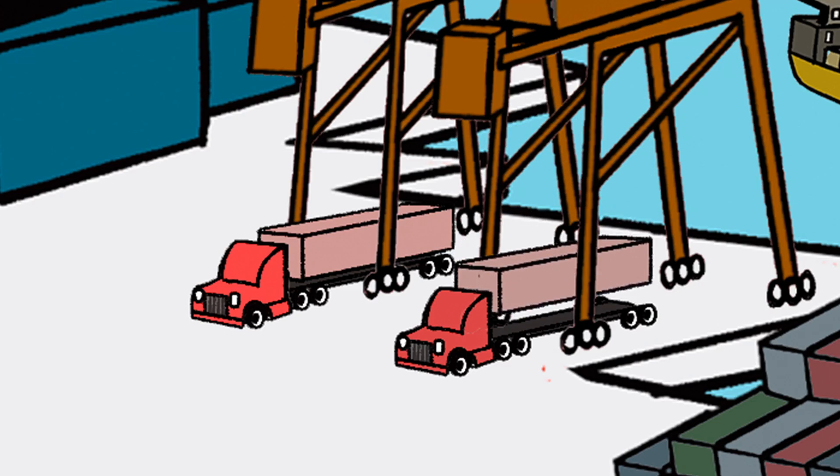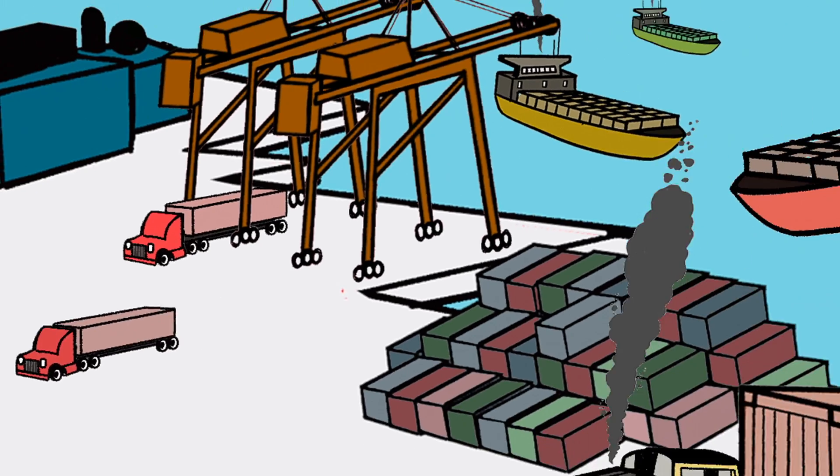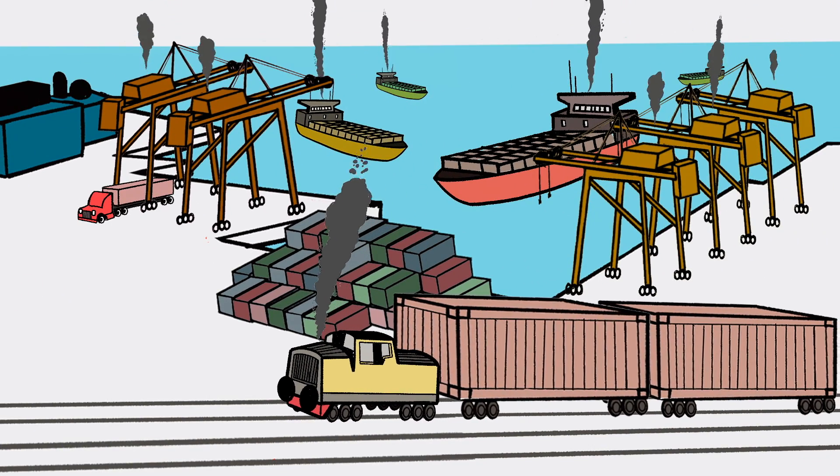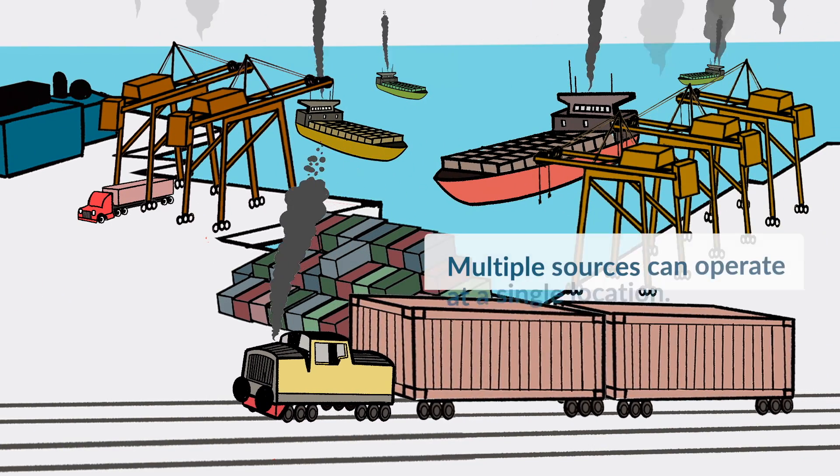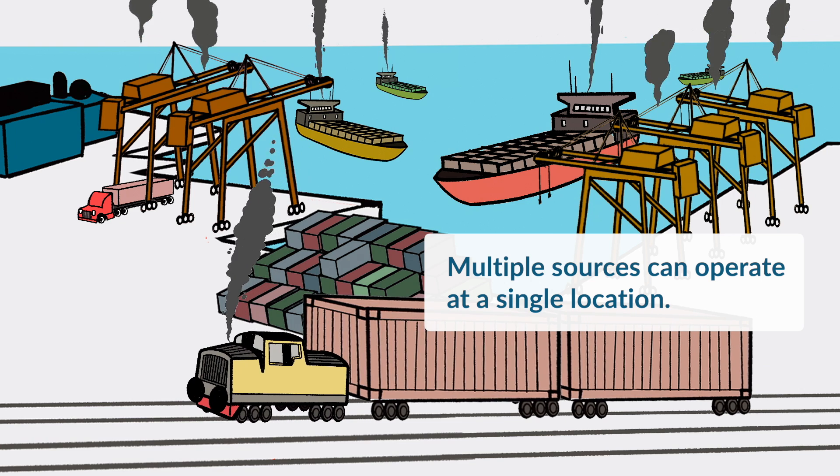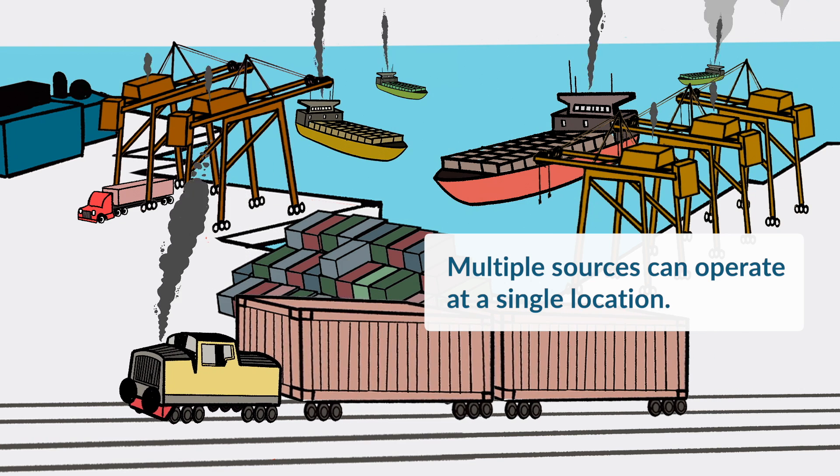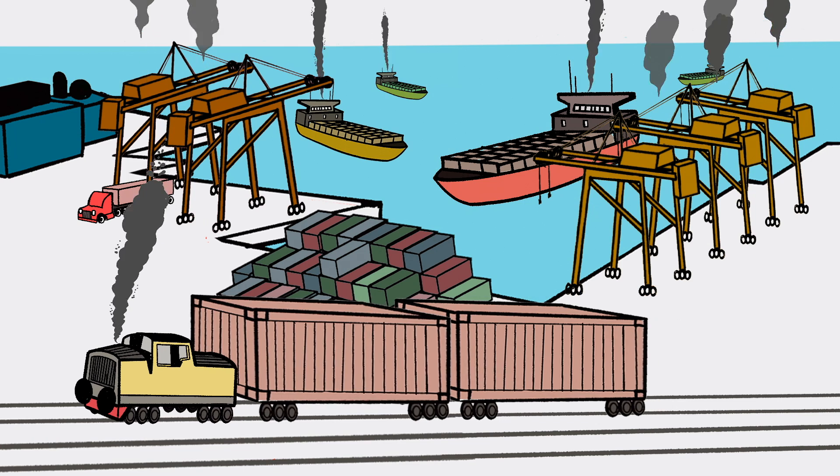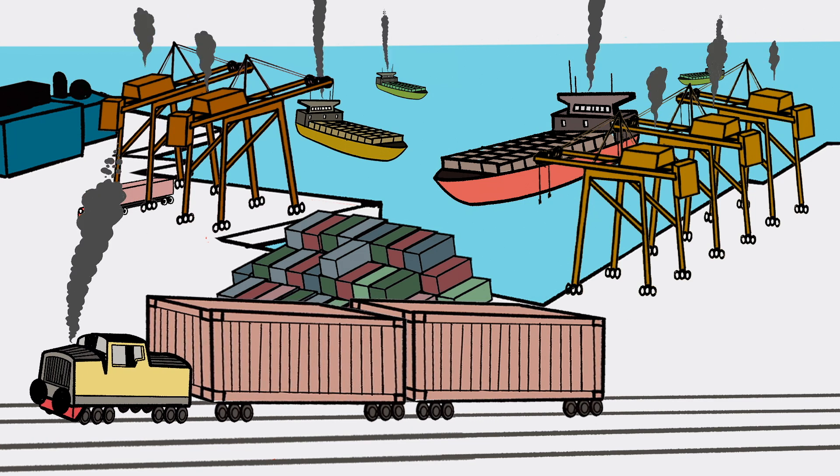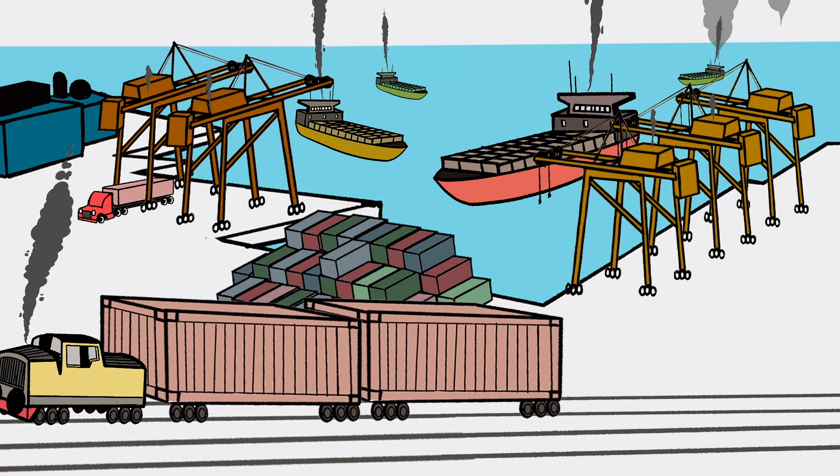In most cases, air quality agencies develop strategies to reduce emissions by these source categories. Sometimes multiple source categories operate at a single location. For example, rail yards and ports may have mobile source trucks operating alongside stationary source equipment.